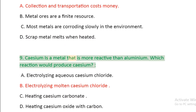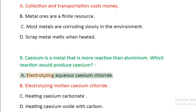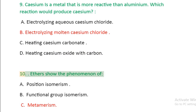Question 9: Cesium is a metal that is more reactive than aluminum. Which reaction would produce cesium? A. Electrolyzing aqueous cesium chloride, B. Electrolyzing molten cesium chloride, C. Heating cesium carbonate, D. Heating cesium oxide with carbon.